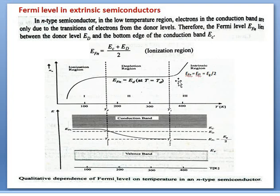After reaching intrinsic temperature Ti, covalent bonds break and electrons start jumping from the valence band to the conduction band — this is the intrinsic process. The temperature at which it starts is the intrinsic temperature, and this region is the intrinsic region. At depletion temperature, Fermi level coincides with the donor level. In the intrinsic region, the material behaves like an intrinsic semiconductor, so Fermi level EFN transforms to EFI, located at the middle (Eg/2).